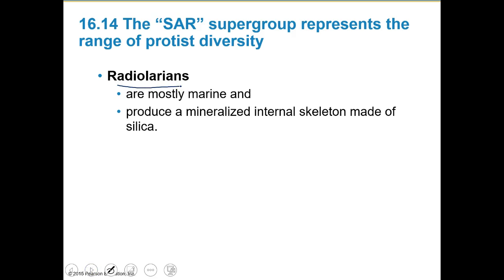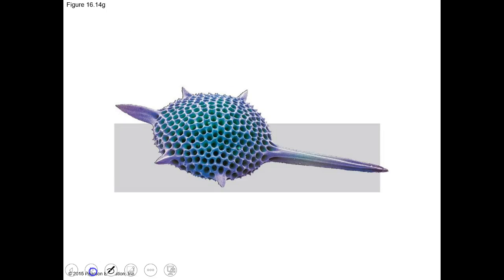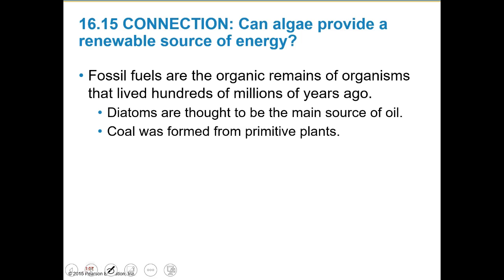Radiolarians are also made of silica — glass-like marine structures. They look absolutely wild, almost like weaponry. That wraps up the examples of the SAR group.